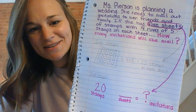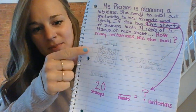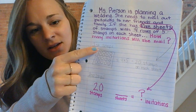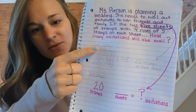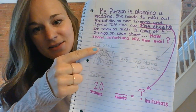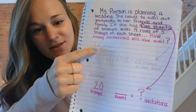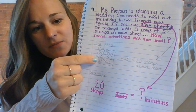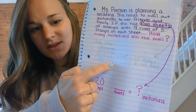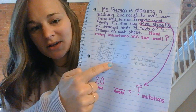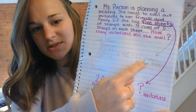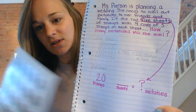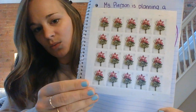I drew an array to help me solve. My array looks exactly like my stamp sheet, and I know I can multiply to make this easier. So if I know that four times five is 20, I found there are 20 stamps on each sheet. Now remember, that's only one sheet.